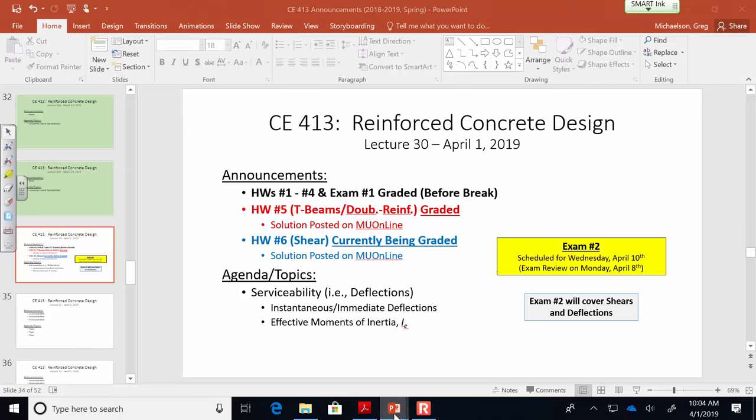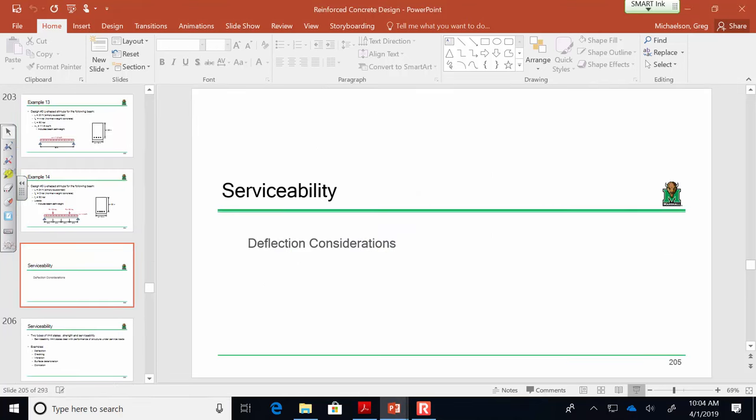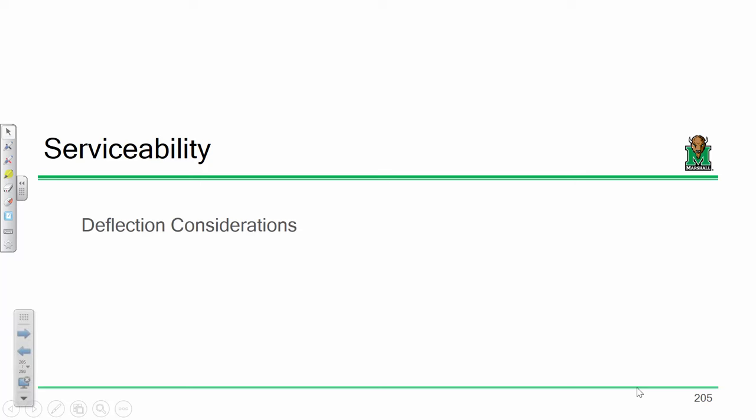Let's talk about deflections. Let's recap where we've gotten throughout this course. We've done moments — we beat moments into the ground. We did φMn and Mu, design of singly reinforced beams, doubly reinforced beams, and T-beams — every different moment consideration under the sun. We took care of moment, shear we've taken care of, and now it's time to look at deflections.